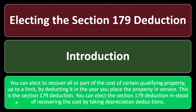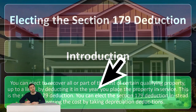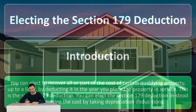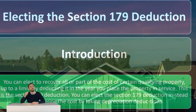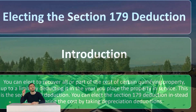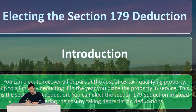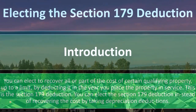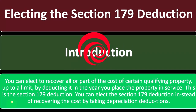You can elect to recover all or part of the cost of certain qualified property — up to a limit — by deducting it in the year you place the property in service. It's important to think about this election at the time you place the property in service, because that's when you can make it. Normally, if you can take the election, you would want to, since deducting sooner is generally preferred.